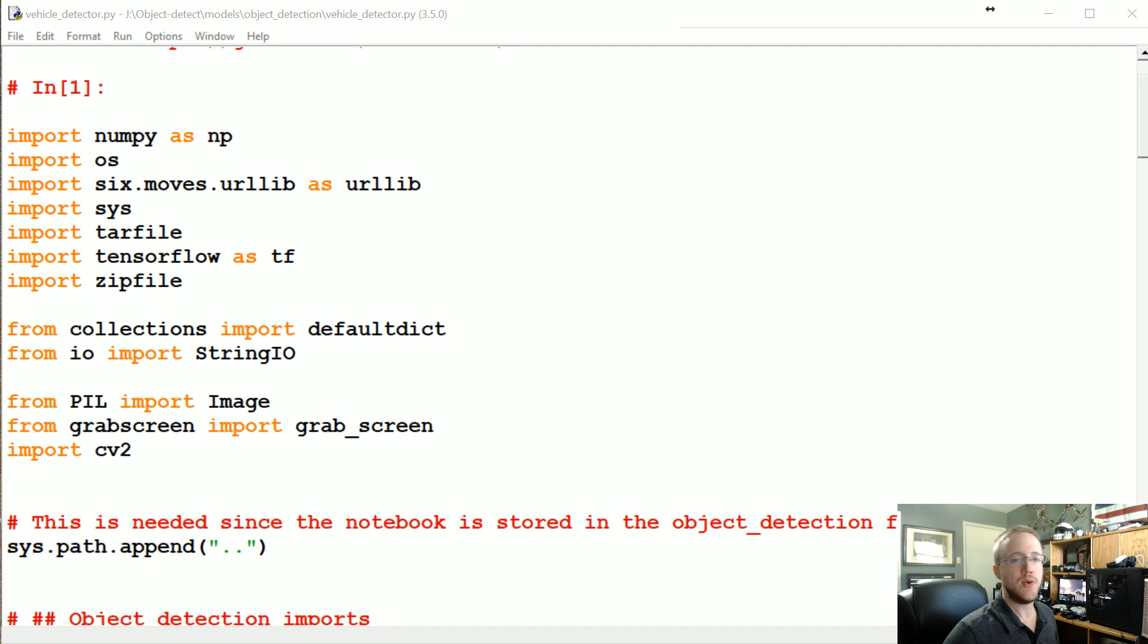What is going on everybody, welcome to another video with Python plays Grand Theft Auto as well as doing things with the TensorFlow object detection API. In the last couple videos what we did was we just used the TensorFlow object detection API in Grand Theft Auto just to show the objects could be detected.